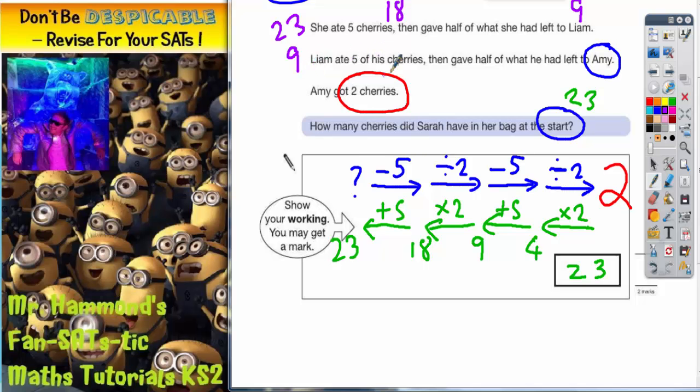If he eats five of his nine cherries, he's going to end up with four cherries left. And if he gives away half, well half of four is two, so he's giving two cherries to Amy. He's giving two to her. That fits in with what it says at the end that Amy's got two cherries. So it must be correct. Sarah must have started with twenty-three cherries.